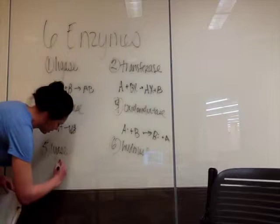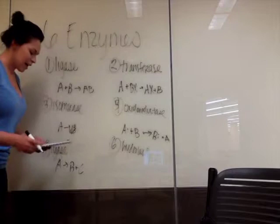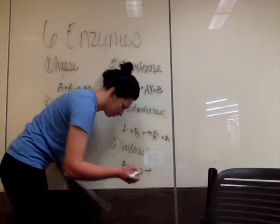For lyase, A goes to B plus C. And then hydrolase is obviously the use of water in that reaction, so A plus water goes to B plus C.